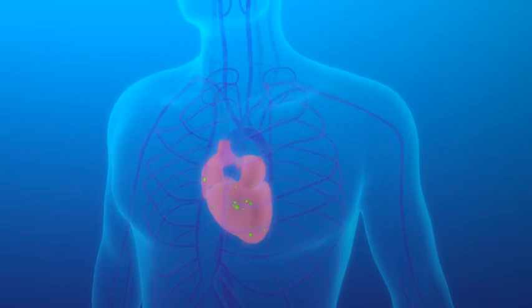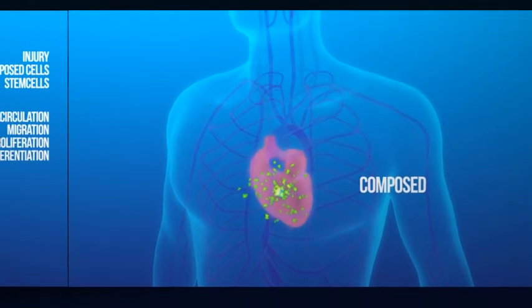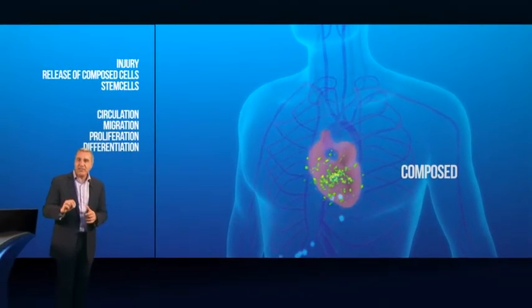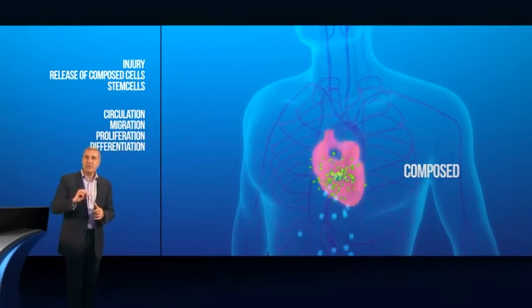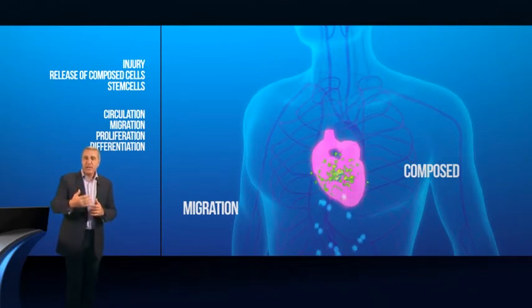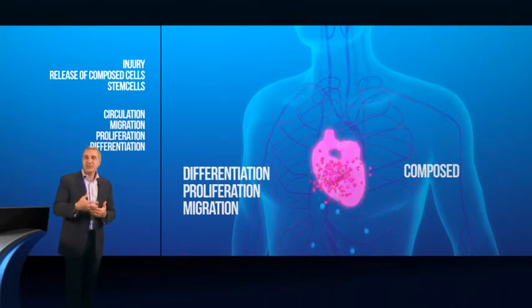The affected tissue starts to release another compound called stromal-derived factor 1, the only compound known to attract stem cells. When stem cells circulate in the fine capillaries of the affected tissue, this compound triggers the migration of stem cells out of the blood into the tissues. And upon contact with the debris of that tissue, stem cells will start to proliferate and then differentiate in cells of that tissue.